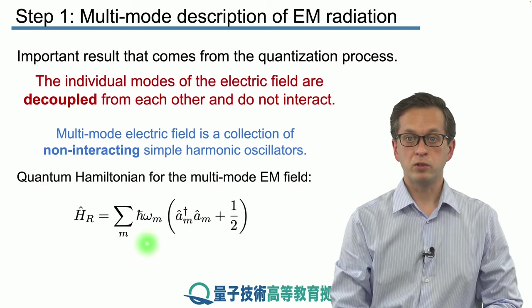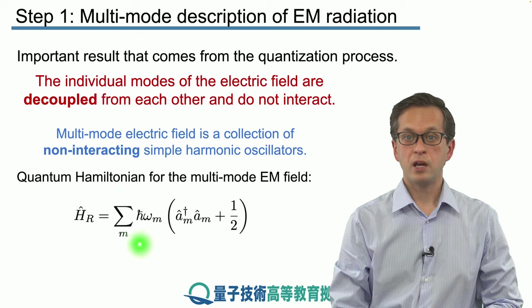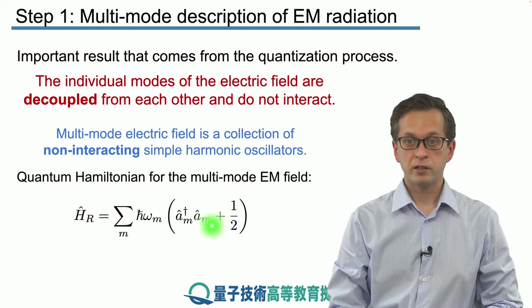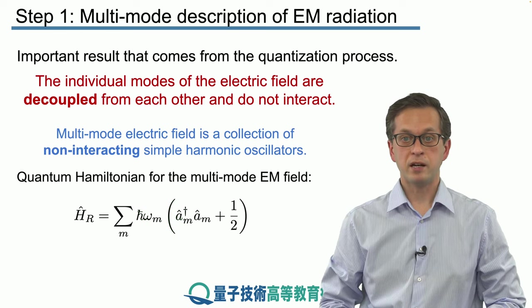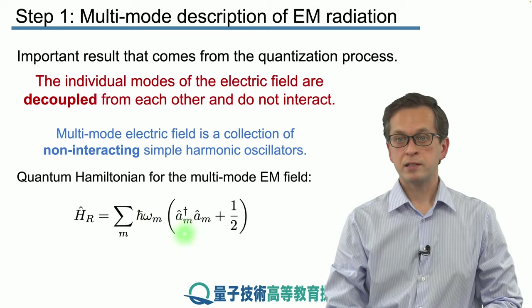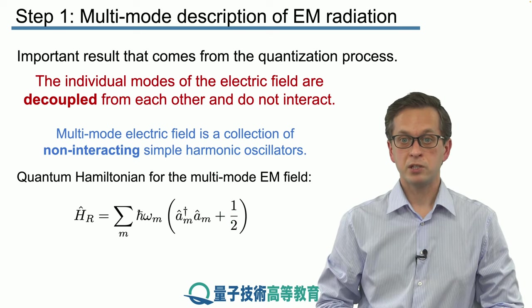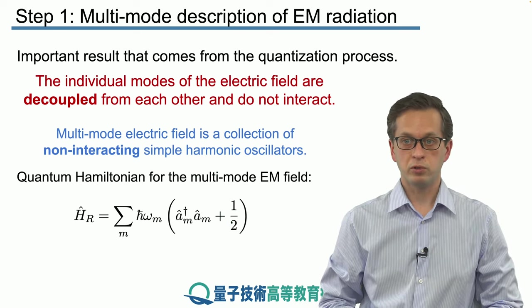To remind you what those are, it's the photon energy h bar omega m times the number operator for mode m given by a dagger m a m plus a factor of one half coming from the fact that the creation and annihilation operators do not commute.